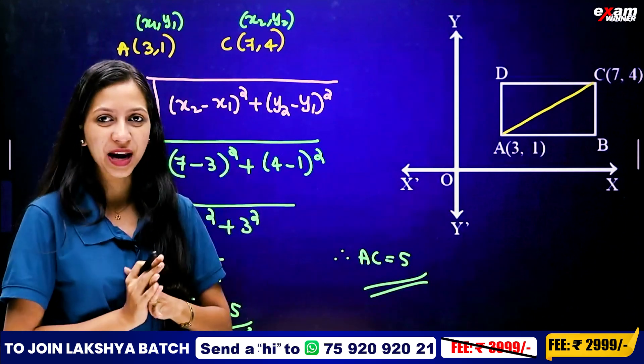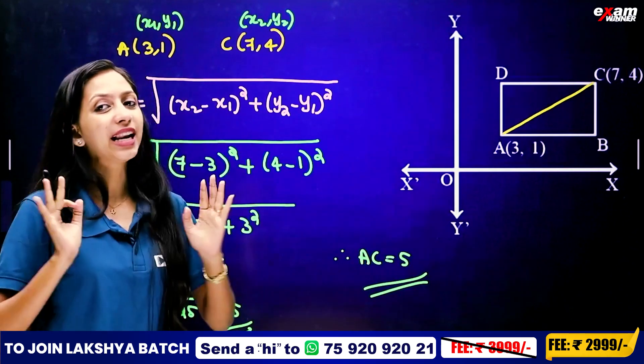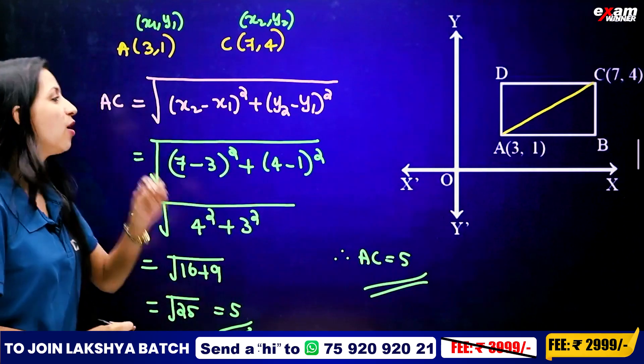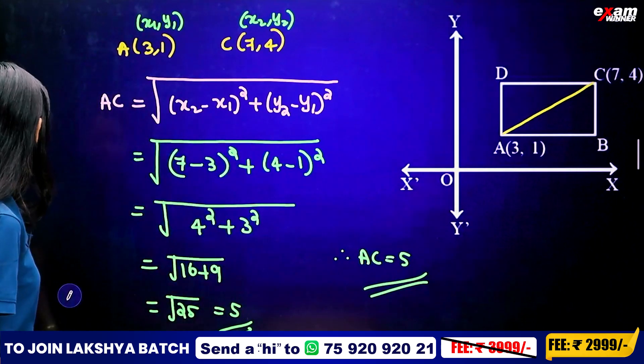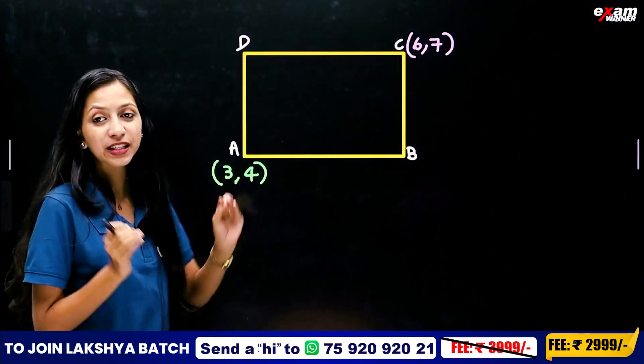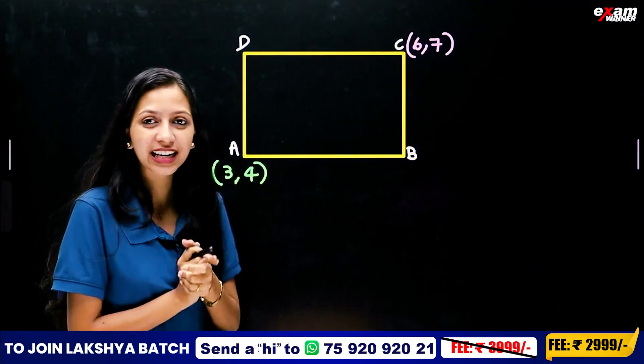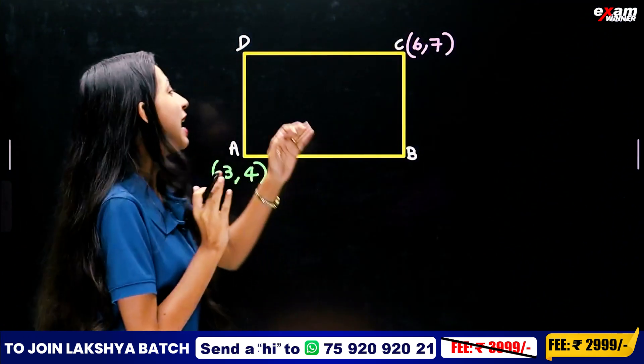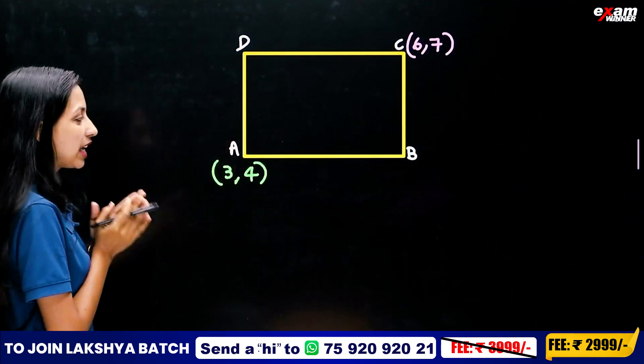We are going to complete the markers. If you don't have any questions, you will have rectangle A, B, C, D fully solved. We already have A and C given.